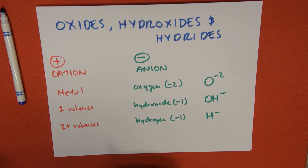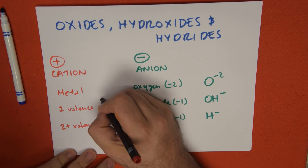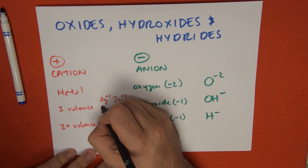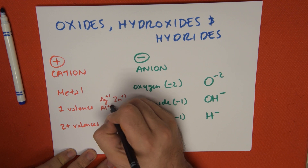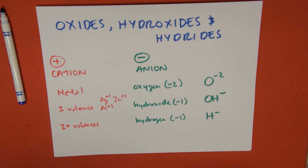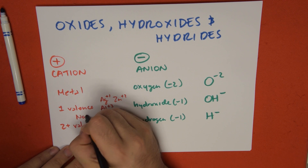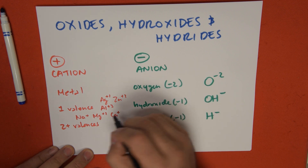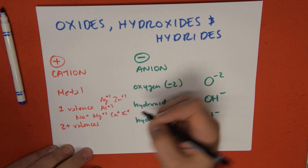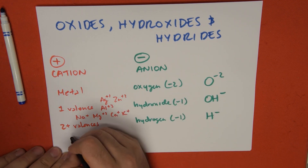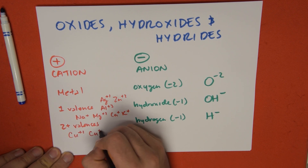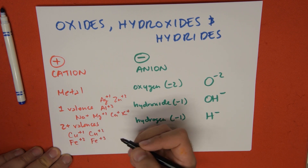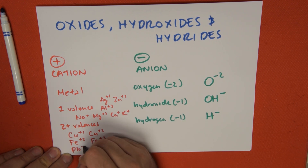Remember, metals with one valence — notable exceptions from the transition metals are silver and zinc, with plus 1 and plus 2. Aluminum is a representative metal, so that's not really an exception. Our typical ones are sodium, magnesium at plus 2, calcium, and potassium. And with multiple valences, the usual suspects: copper at plus 1 and plus 2, iron at plus 2 and plus 3, lead at plus 2 and plus 4.